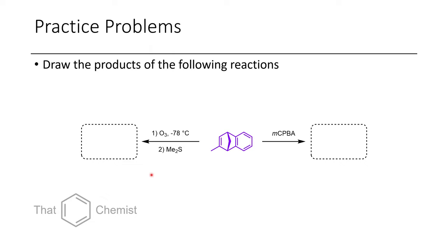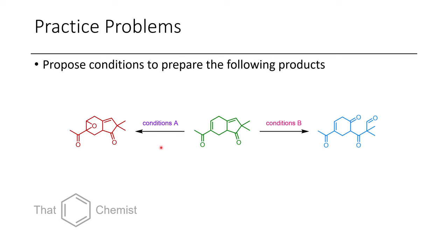For this lecture, I'd like to assign two practice problems. First, show the products of the following reactions: we take this cyclohexane-containing alkene, treat it with ozone and dimethyl sulfide, and we will obtain one product. However, if we treat it with MCPBA, we'll get a different product. If you're not sure which product we'll get with MCPBA, I'd encourage you to check out lecture 26. In the final practice problem, show that you can take this one compound and convert it into two different products depending on the conditions you choose — you should be able to propose conditions that will give you this epoxide on the left, as well as this ketoaldehyde on the right.